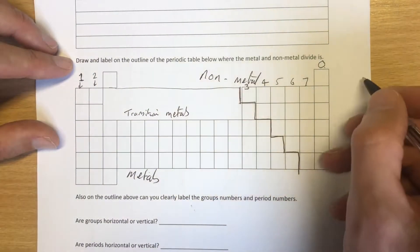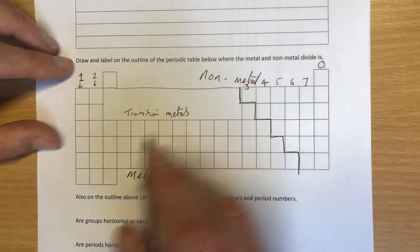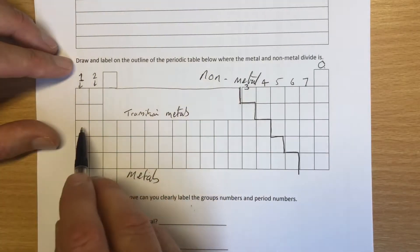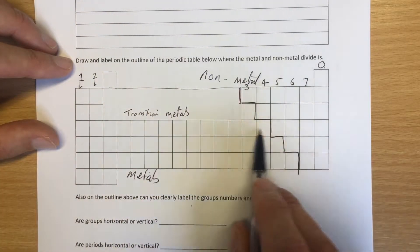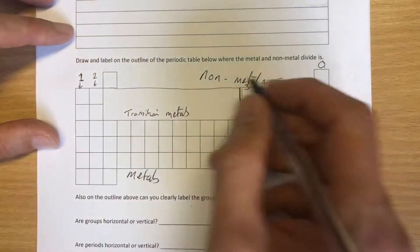Period numbers go across. This one was period one here. A lot of people forget period one. One of my favorite questions is to ask students to name me an element in period three, and students will often pick an element from this row here. That's not right. That's period four because they've forgotten period one.